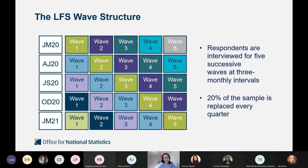So in any given quarter — let's take January to March 2020 — you have a cohort of respondents in wave one, one in wave two, wave three, et cetera. A cohort from each wave makes up the LFS dataset on a quarterly basis.